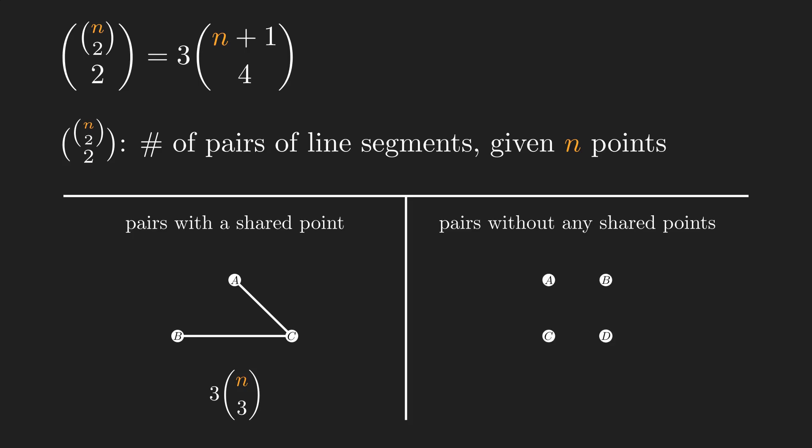If the 2 line segments do not share any points, we need to select 4 points out of n, and it can be done in n choose 4 ways. With 4 given points, there are 3 possible ways for drawing 2 line segments which are shown here. And the total number of pairs of line segments that do not share a point is 3 times n choose 4.